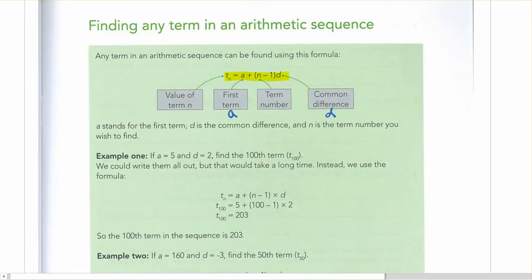The two things that we've got to get our head around are the term number n, and the value of the term number, which is what we say is t, and then we put a little n next to it. So t sub n is how you might say that, because it's a subscript for n. n is the term number you wish to find.